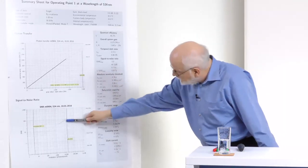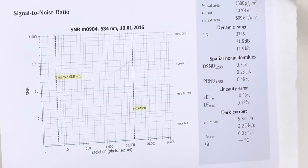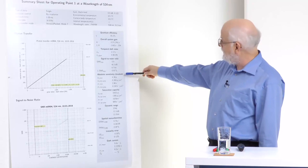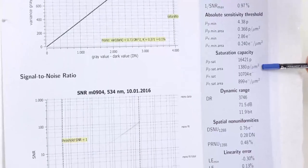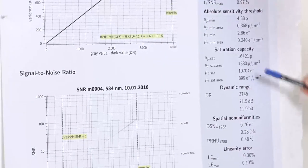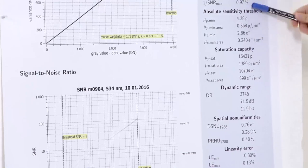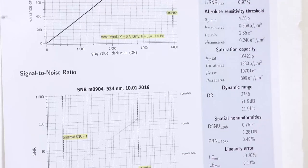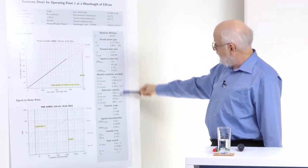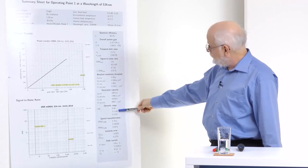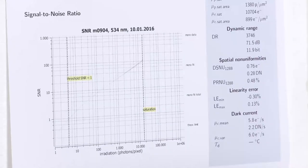Then we have the other limitation: unfortunately the image sensor gets saturated, and this is called the saturation capacity. You see the very same type of figures — expressed in photons, in photons per square micrometer, in electrons and in electrons per square micrometer. Then the direct ratio of these two things is the dynamic range. In the same way as the SNR, you have the ratio itself, expressed in dB and also in bits.